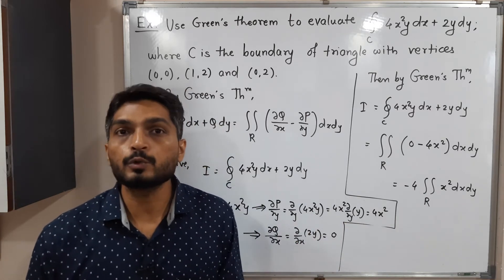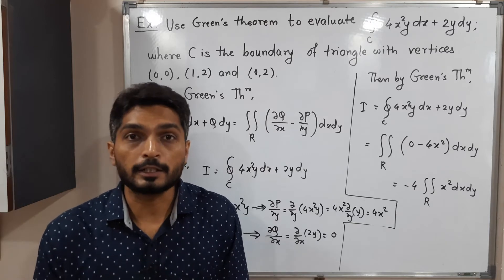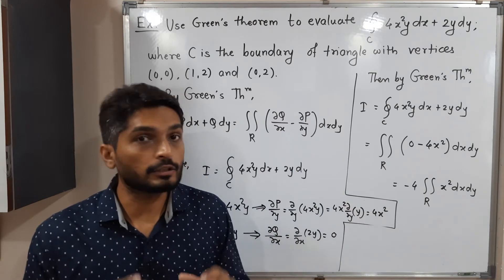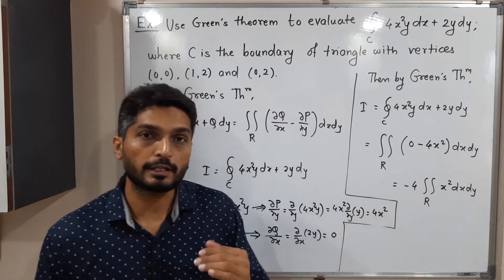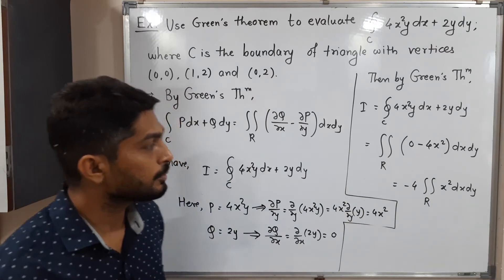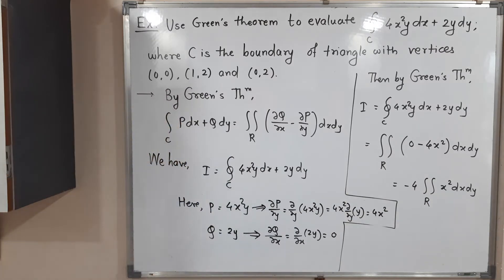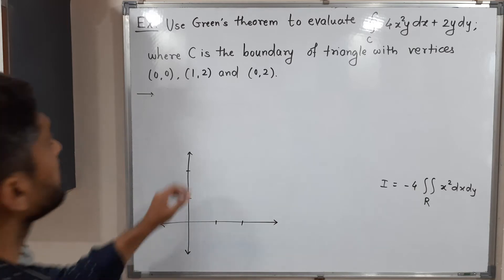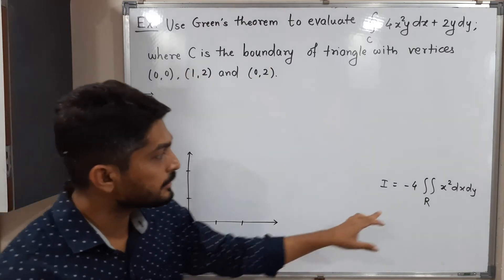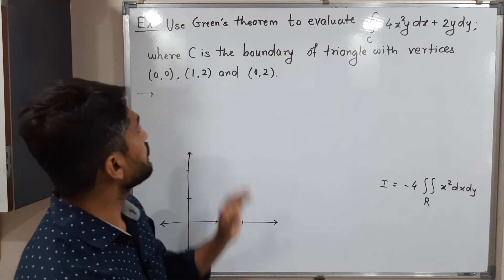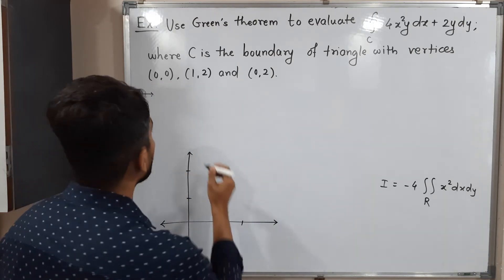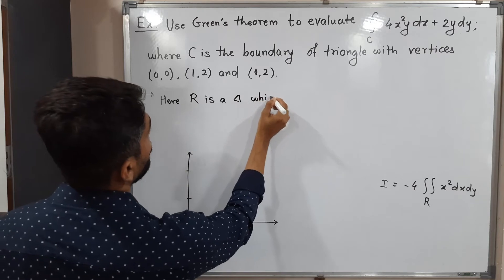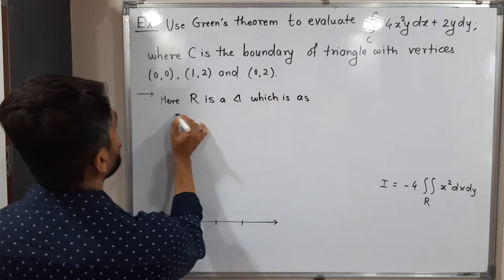To solve any double integration, we need the limits. Right now we don't have those limits, so let us find the region first. C is the boundary of a triangle, meaning region R is a triangle. Let us identify it with the given vertices and show it below.